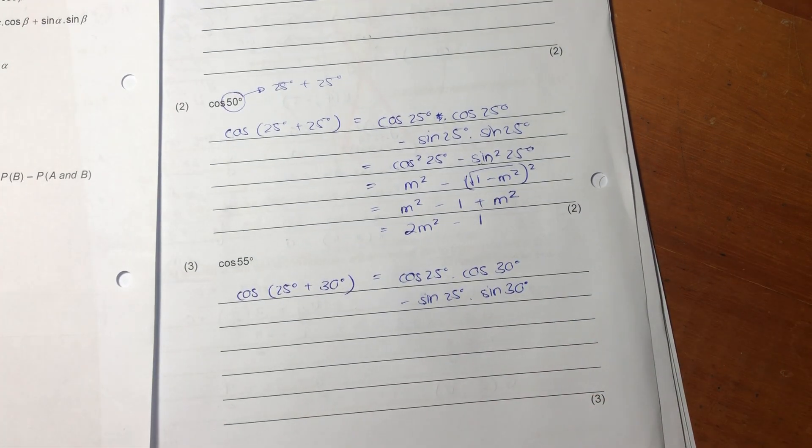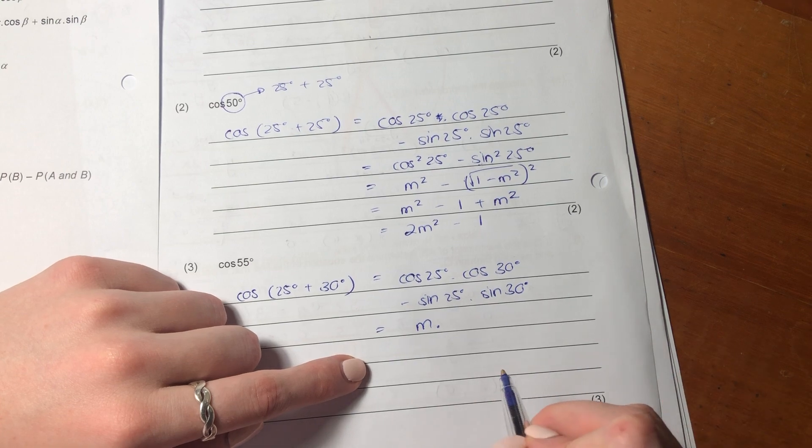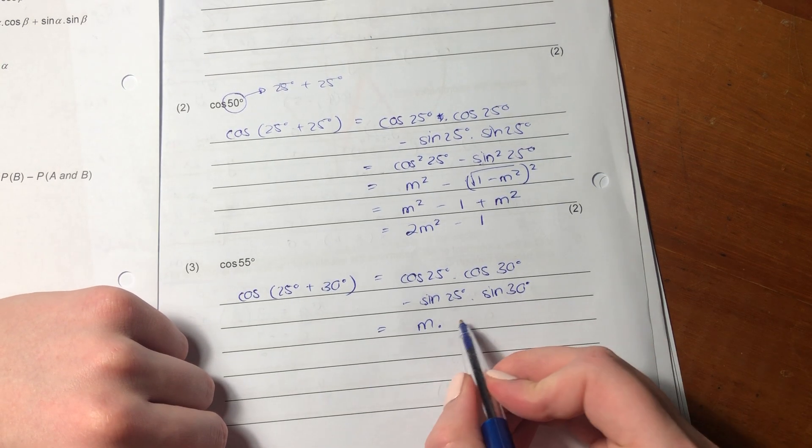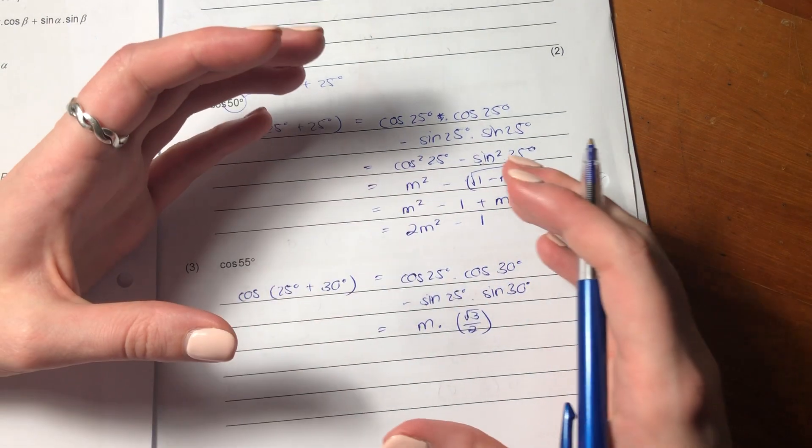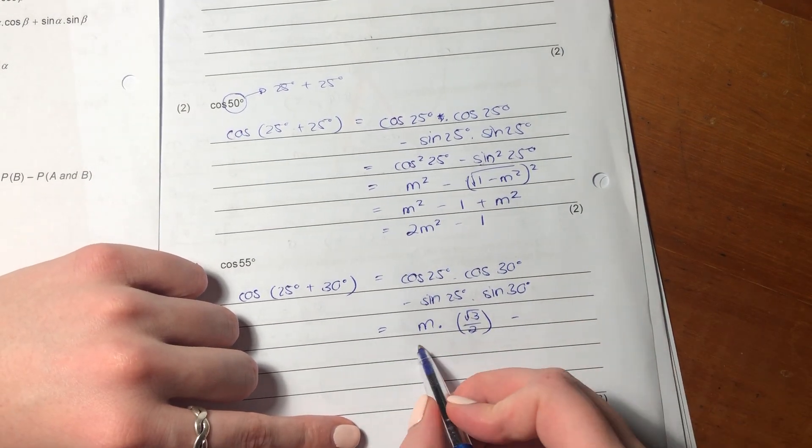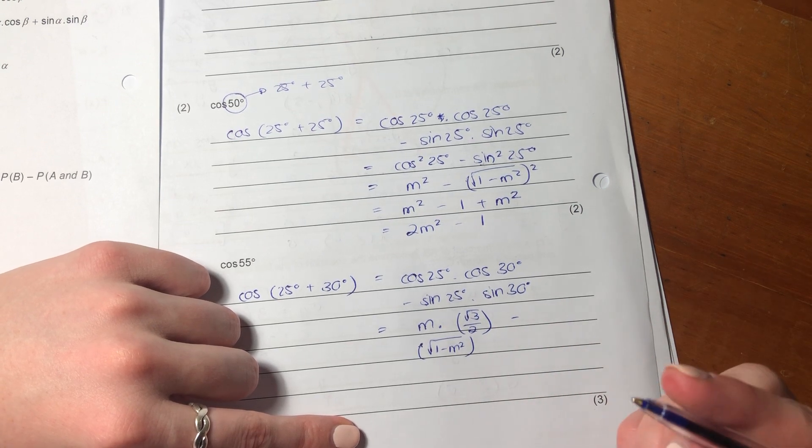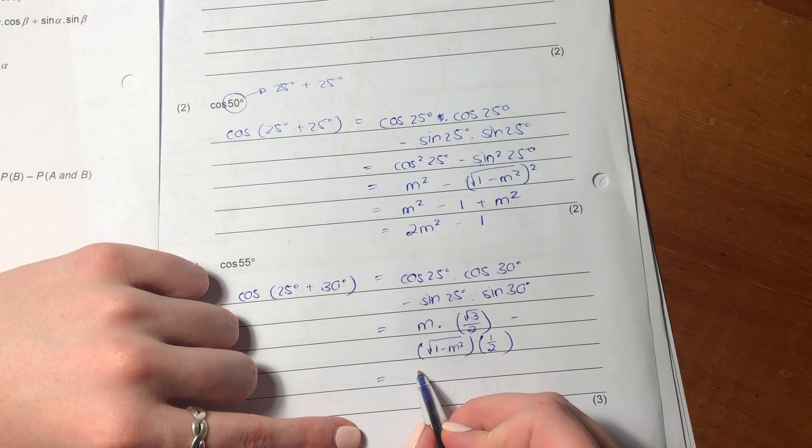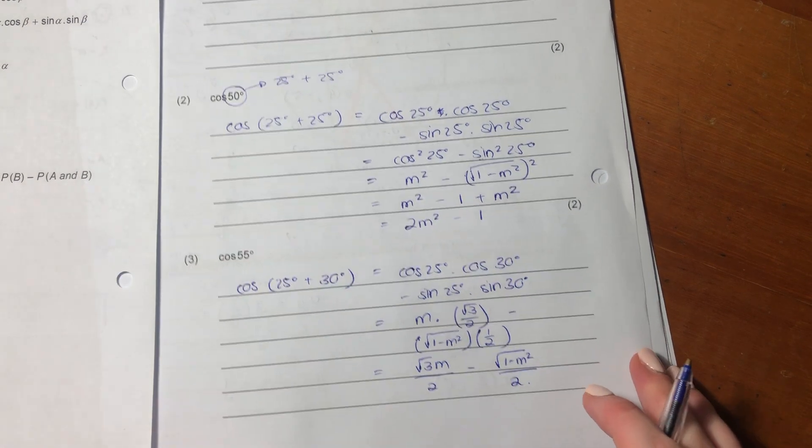So in this instance, what's acceptable or a different pathway we can use is that we know what cos25 is, so we just put an m there. And we should know what cos30 is from our special angle triangle. If you don't know your special angle triangles, please go and revise them. But cos30 equals square root of 3 over 2. Then again, we know what sine 25 is because we already calculated it in our previous question, so it's square root of 1 minus m squared. And sine 30 is a special angle, so it is 1 over 2. So let's just clean it up a little bit. It's going to be square root of 3m over 2 minus square root of 1 minus m squared all over 2, and that's our final answer.